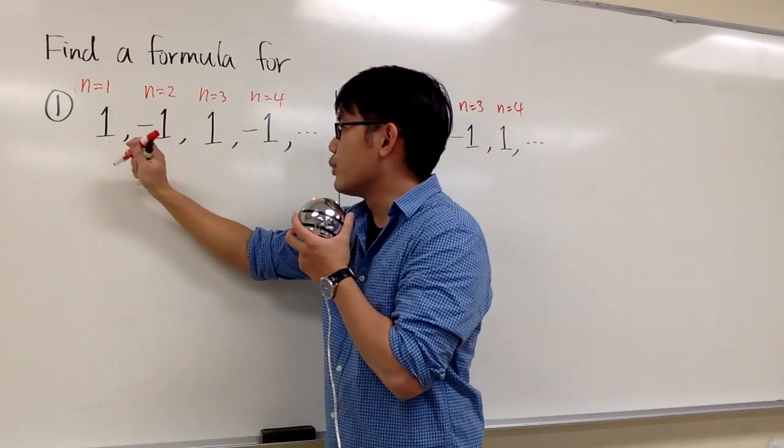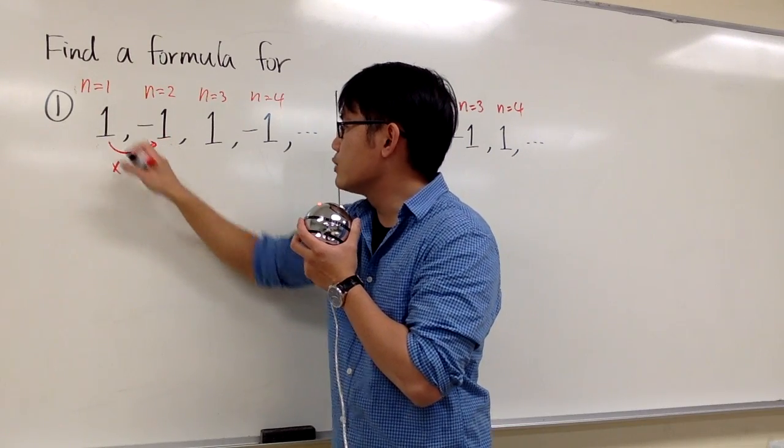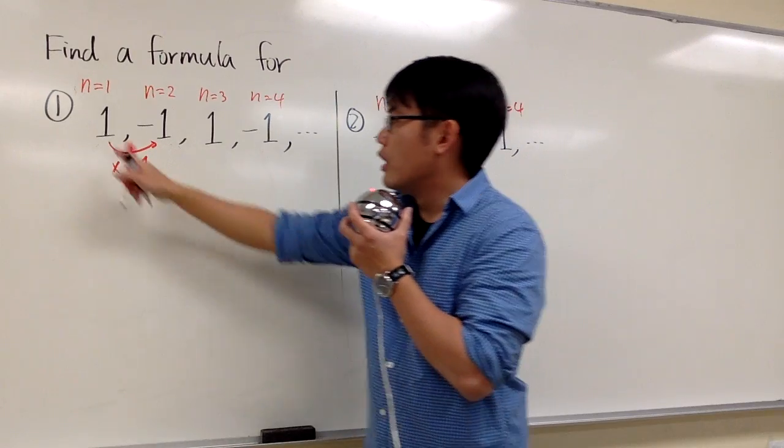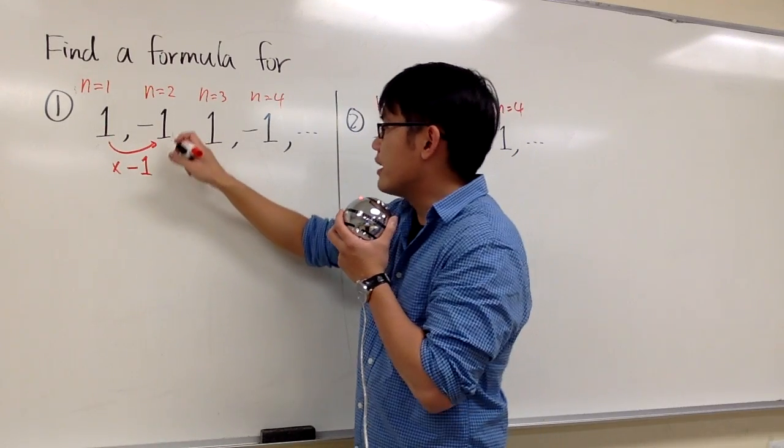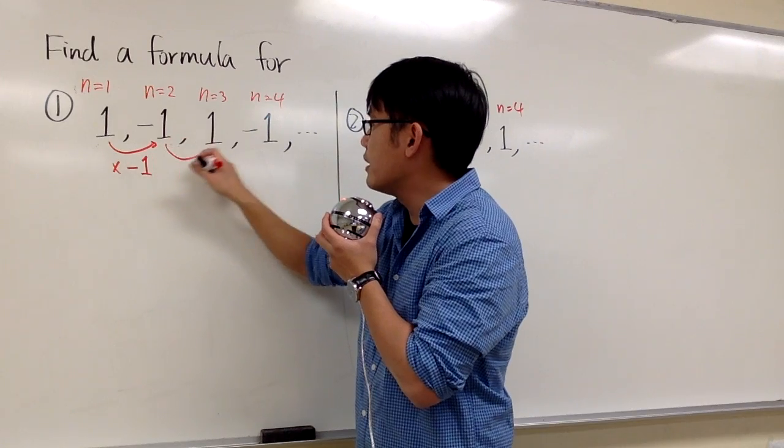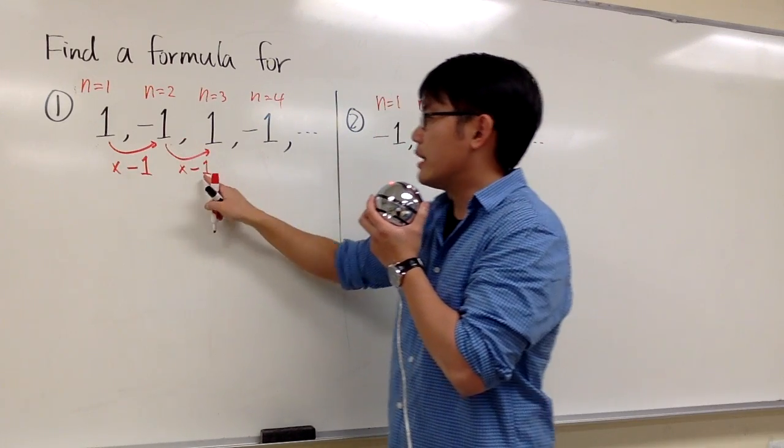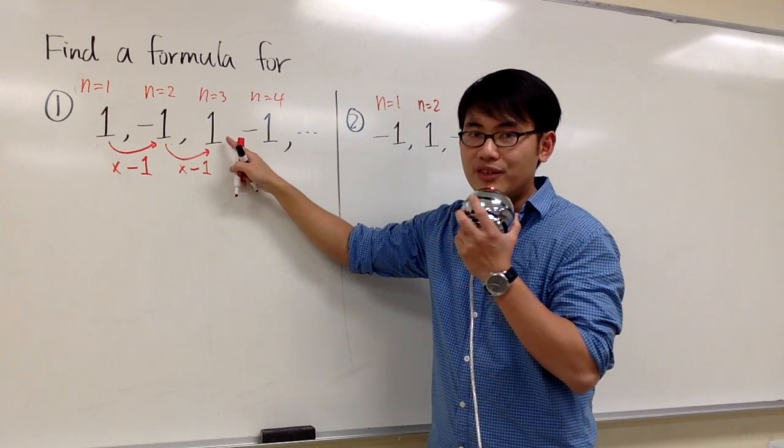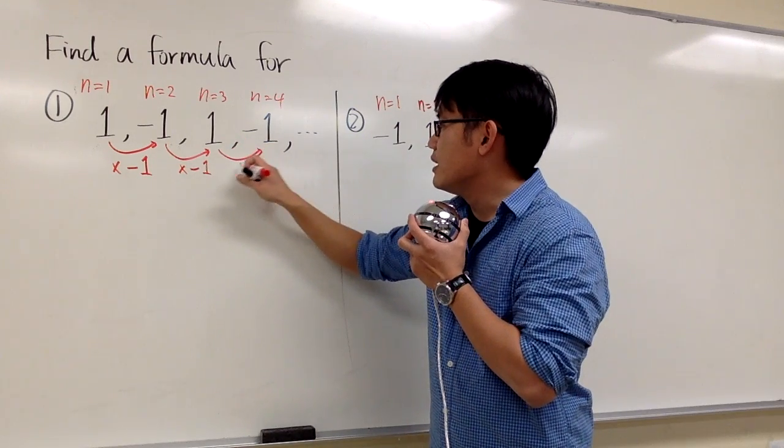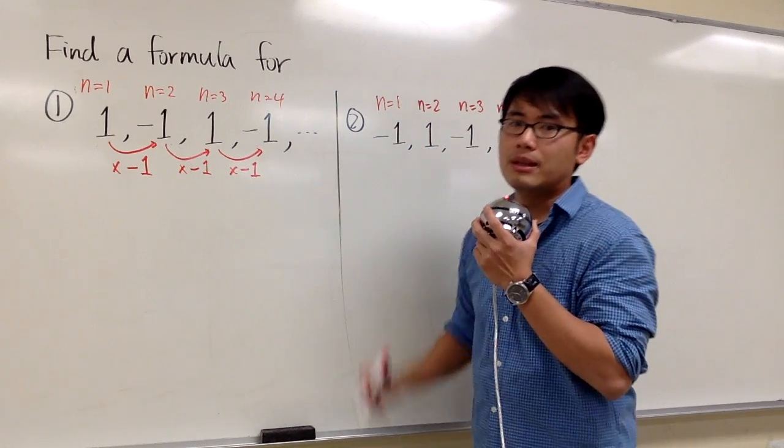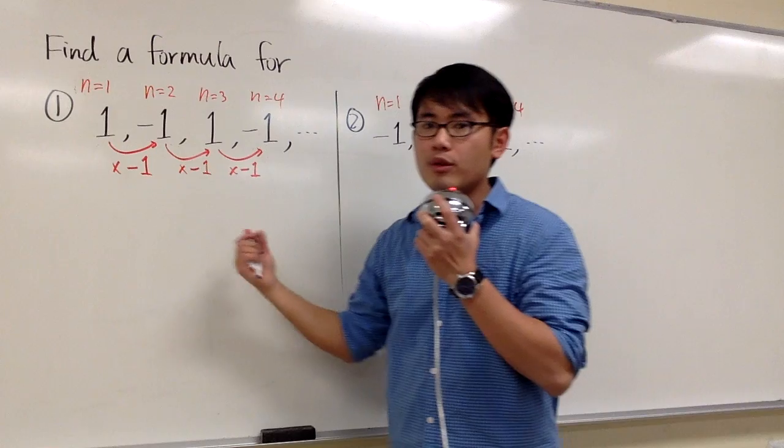Now let's look at it this way. If I take 1 and multiply by negative 1, 1 times negative 1 gives us negative 1. And if I continue, if I take this negative 1 and multiply by negative 1 again, negative 1 times negative 1 will also give us the positive 1. In fact, that's the pattern. I keep multiplying by negative 1 throughout these numbers. Because we keep multiplying by the same number over and over,